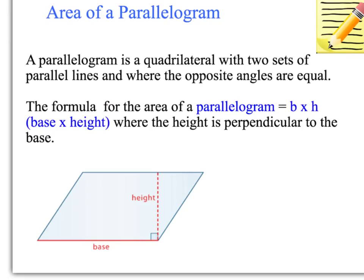First of all, let's define what a parallelogram is. A parallelogram is a quadrilateral, so it's a four-sided shape, with two sets of parallel lines and where the opposite angles are equal. So we've got a set of parallel lines and the opposite angles are equal.